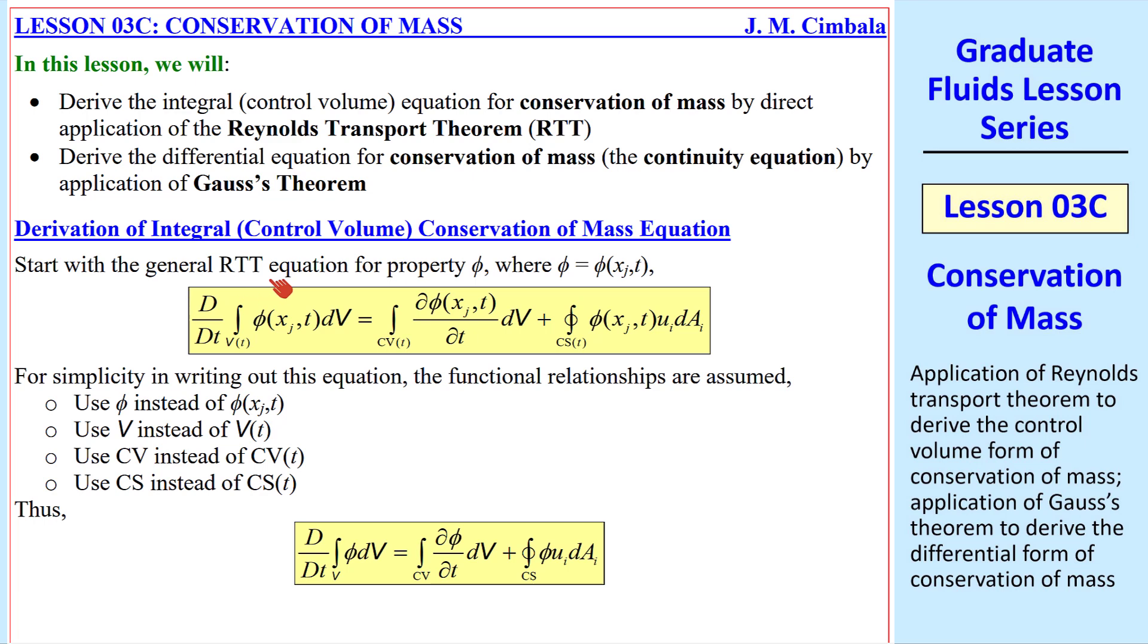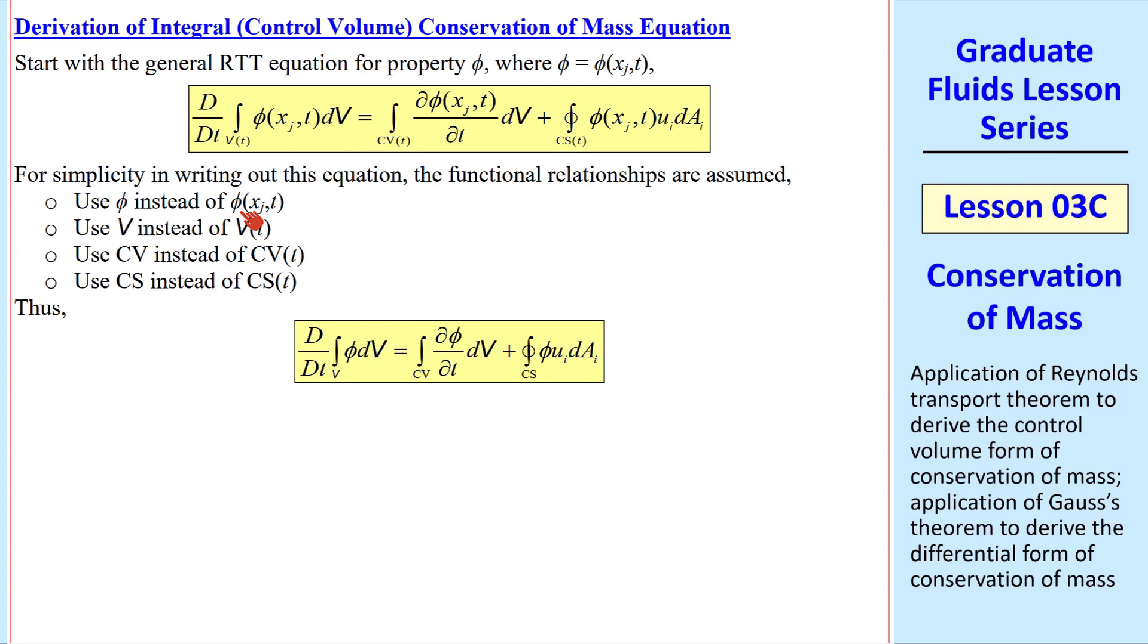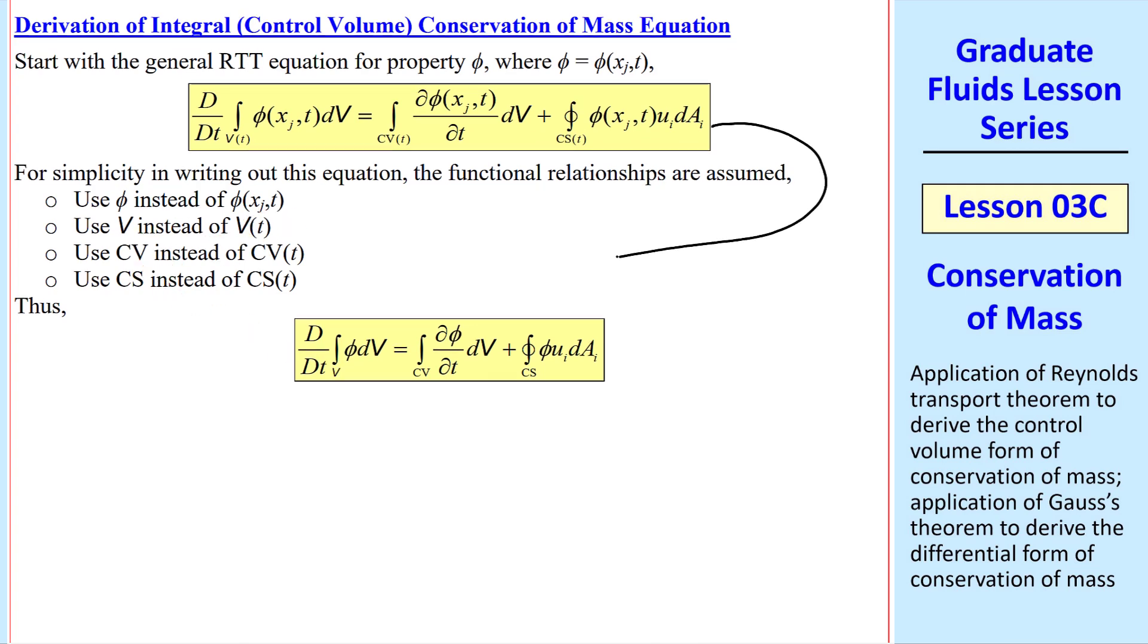We start with the general RTT equation for property phi, a function of space and time, as was derived in the previous lesson. For simplicity in writing all this out, we'll write phi instead of this, v instead of this, etc. So this equation is simplified to this form.